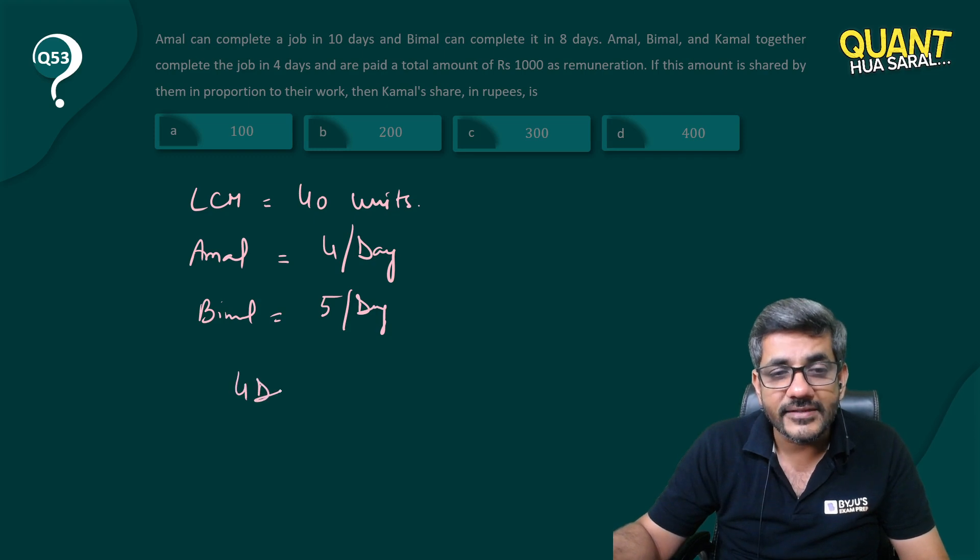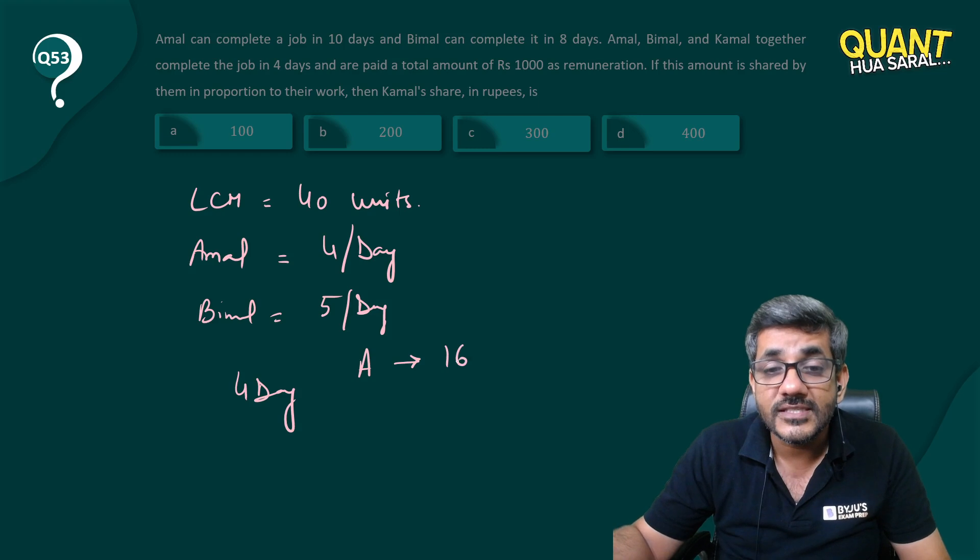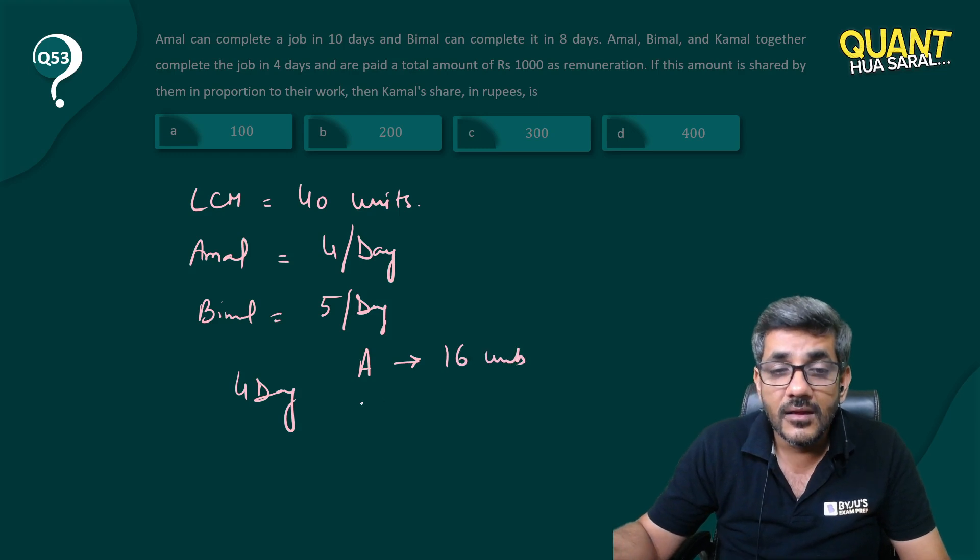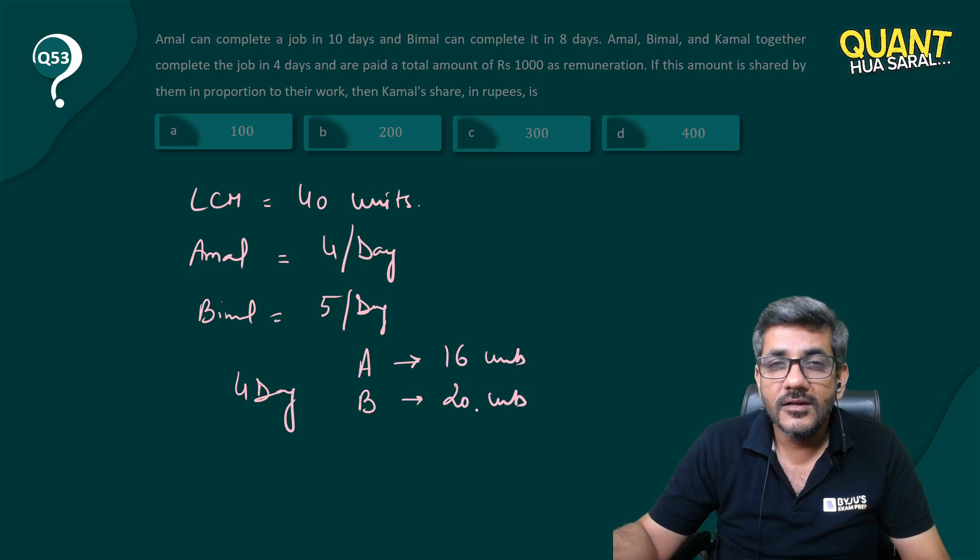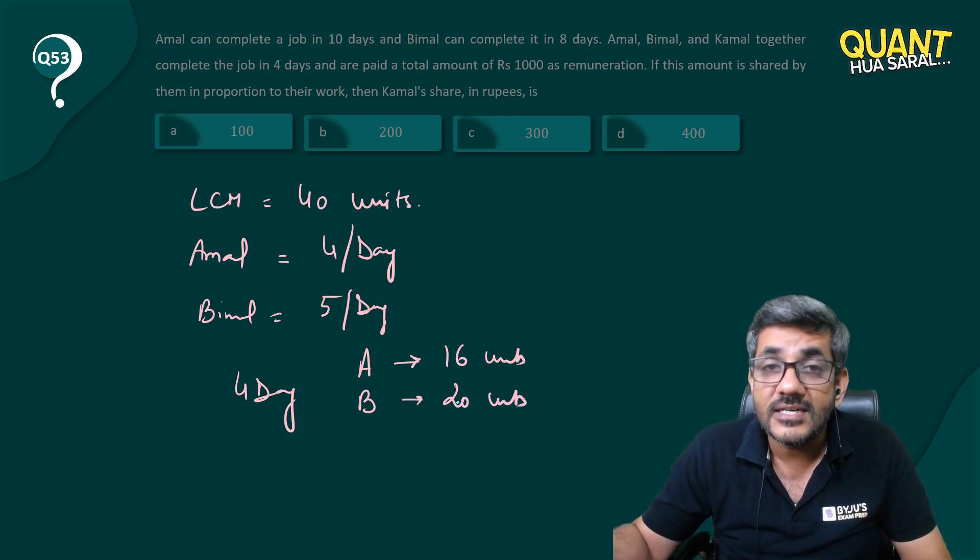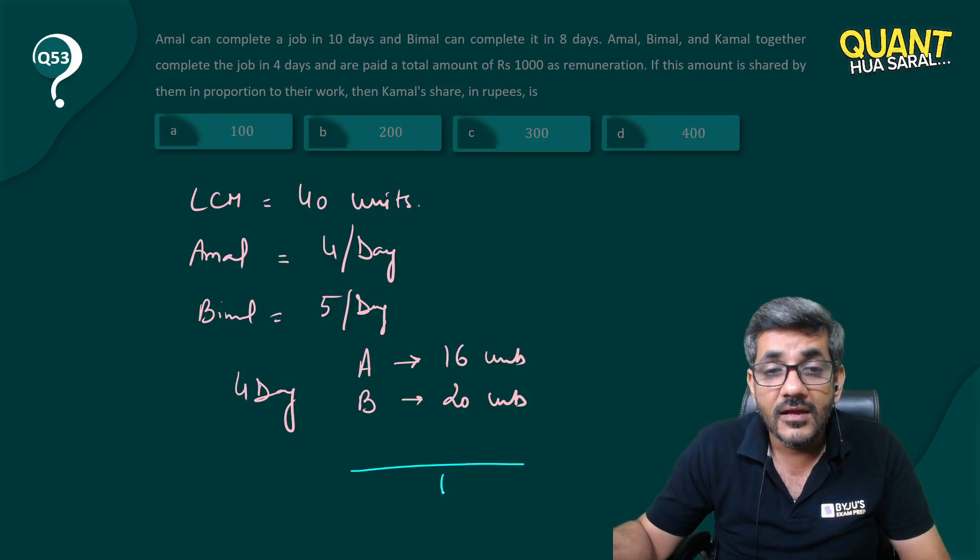So in these 4 days, Amal must have made 4 into 4, 16 units. Bimal must have made 4 into 5, 20 units. So if 16 and 20, 36 units are made by A and B...